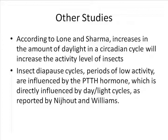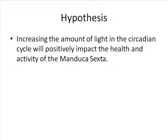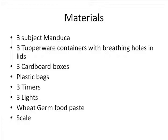From looking at other studies, it was determined that the increase in the amount of light would likely increase the activity level of the Manduca. Additionally, decreasing the amount of light would cause the Manduca to enter a diapause state due to their increased PTTH hormones. From the studies that were analyzed, it was determined that increasing the amount of light in the circadian cycle would positively impact the health and activity of the Manduca Sexta.